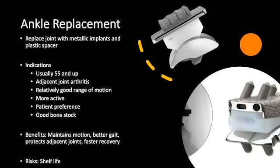Ankle replacements — just like the hip or the knee — replace the joint with metal implants and a spacer. These implants are getting better and better. In general, we look for somewhat of an older population. Especially if there's adjacent joint arthritis — a very stiff foot where everything is arthritic around the talus — this can be problematic. So in patients who have subtalar arthritis or talonavicular arthritis, even if it's early, I try to do an ankle replacement in these patients.